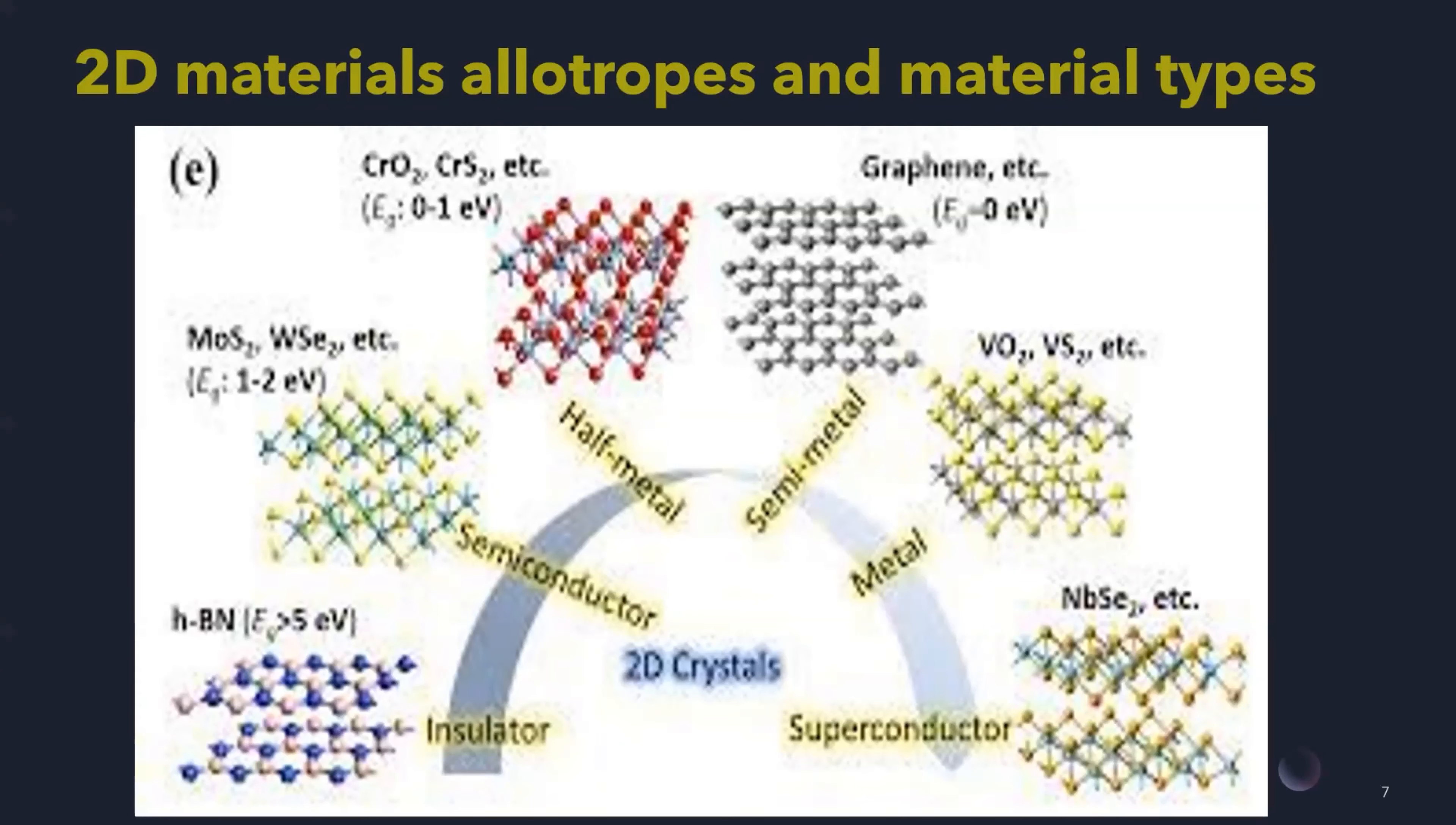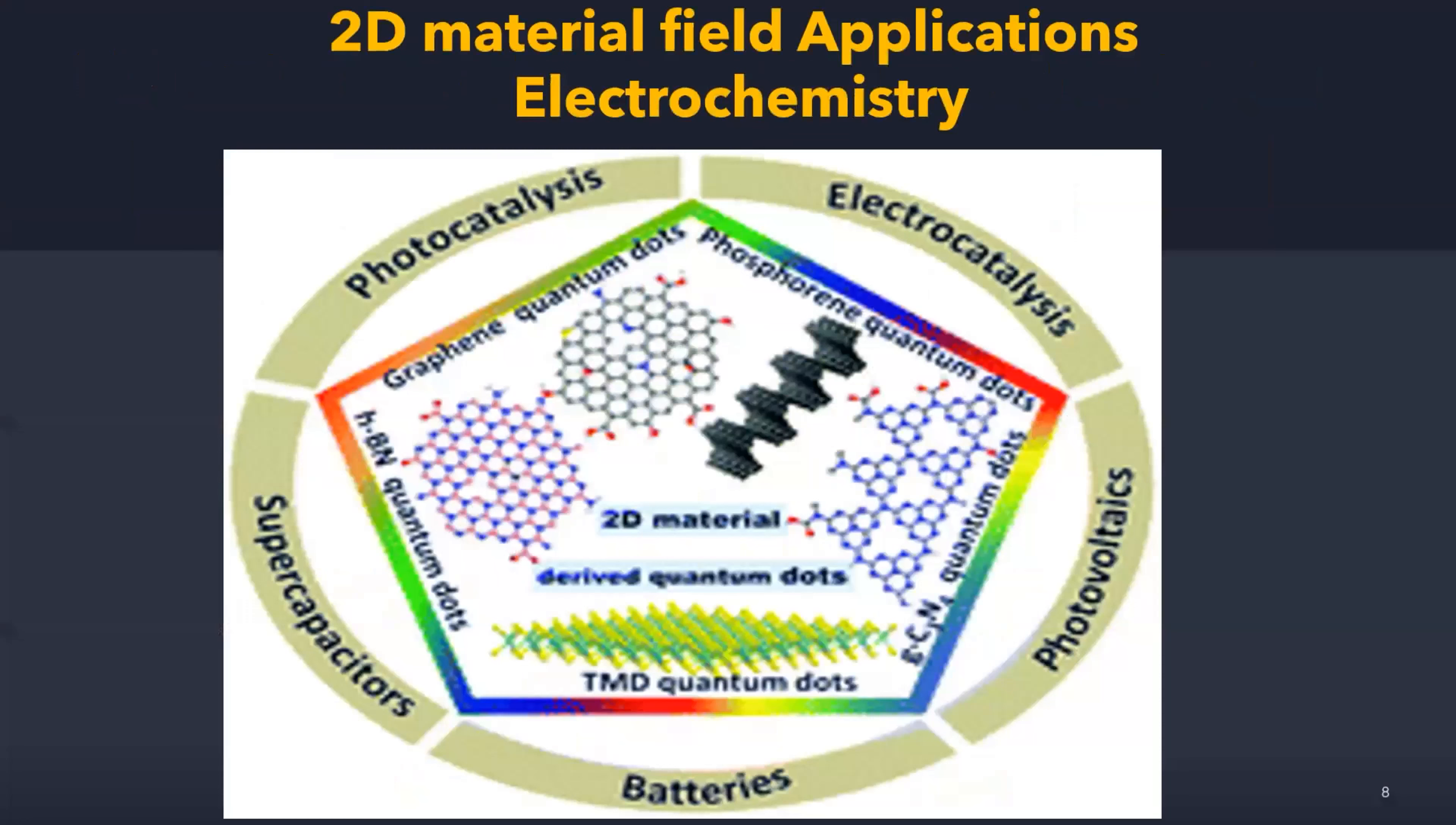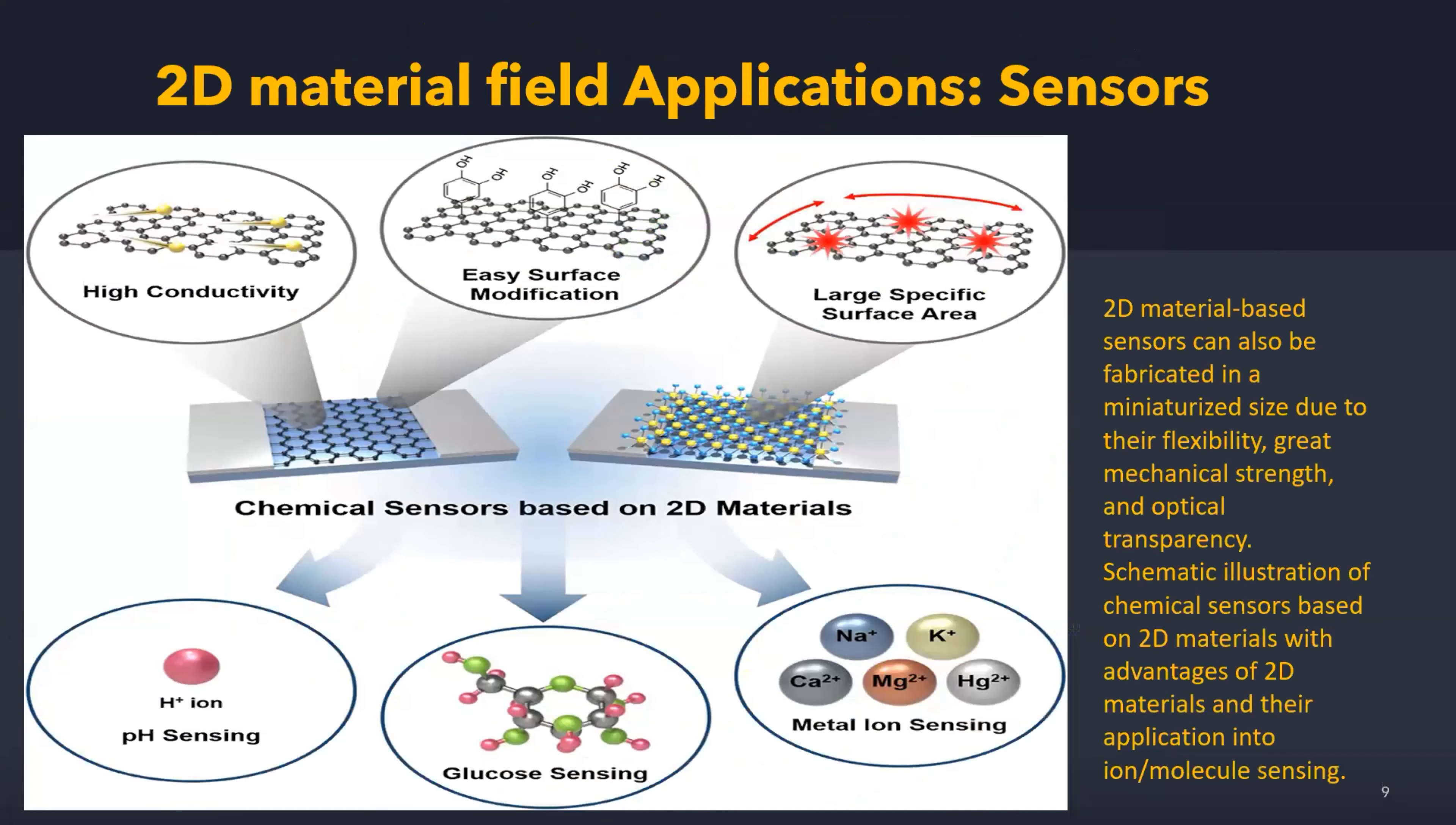These materials are used in electrochemistry, such as photocatalysis, electrocatalysis, photovoltaics, batteries, and supercapacitors. They also be used in other sensors.